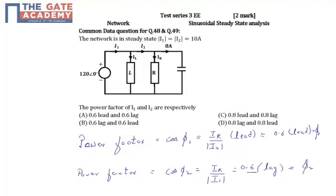We have already seen that power factor is nothing but cos φ, which would be ir by |i2|. This would be a leading current, so we would have 0.6 lead. This would be for current i2.